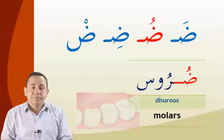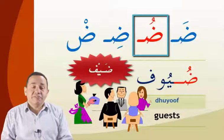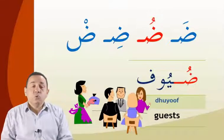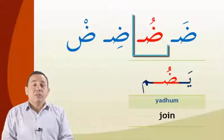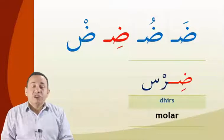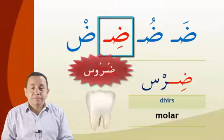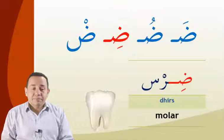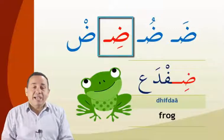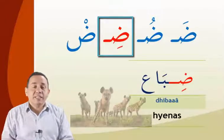ضُ — ضروس (duroos). ضُ — ضيوف (duyoof) — ضيوف. ضِ — يضم (yadumm) — يضم. ضِ — ضرس (dars), the singular of ضروس. ضِ — ضفدع (difda'). ضِ — ضباع (dibaa').